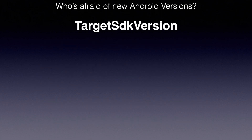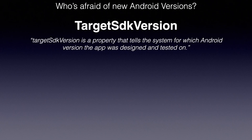But now let's move on to the more interesting one — the target SDK version. Compile SDK version is simple, but that does not mean target SDK version is complicated. One of the things that one can read about it is that target SDK version is a property that tells the system for which Android version the app was designed and tested on. In my humble opinion, this is one of those things that simply tells you nothing meaningful. What does it mean that we tell the system that we tested on that version? Is that a disclaimer? Is that a promise? Do we have consequences if we lie? And what does the system do with that information?